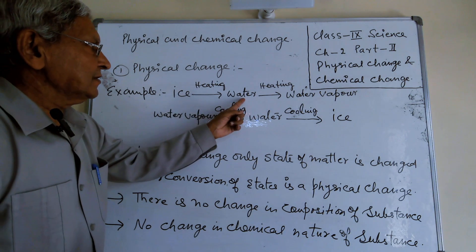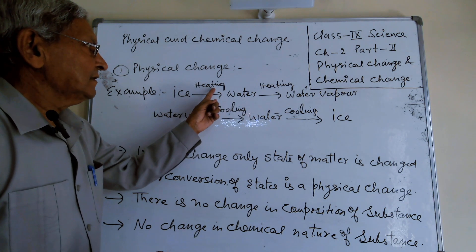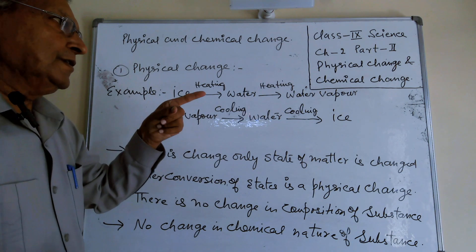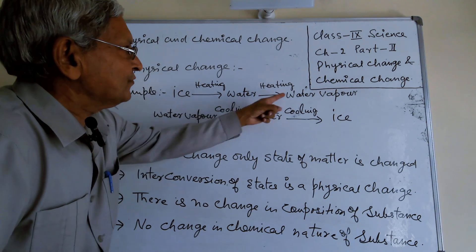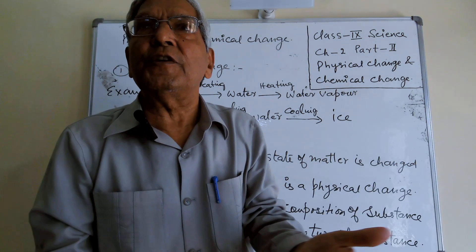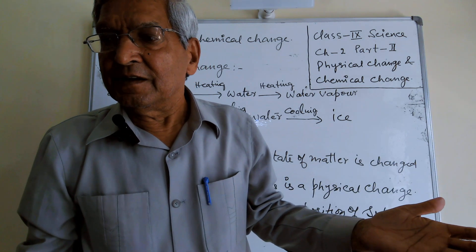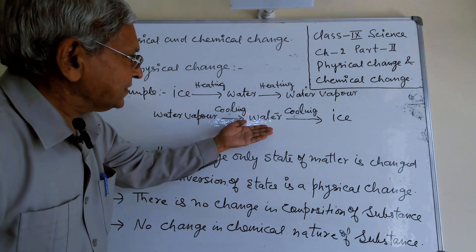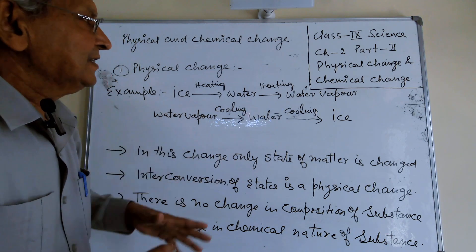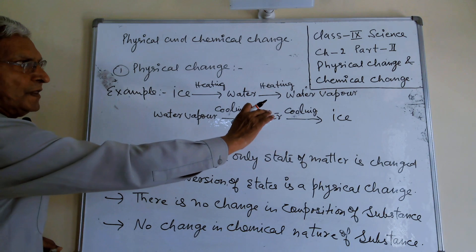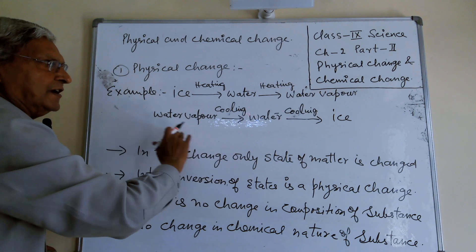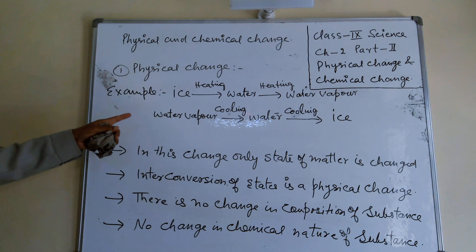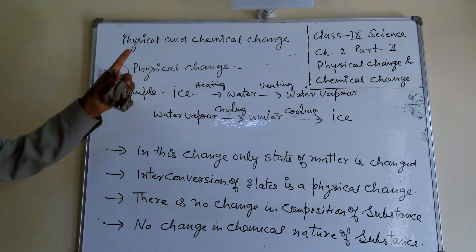Ice can be changed into water on heating and water can be changed into water vapors on heating. But you see, my dear students, ice, water, and water vapors are one and the same thing. There is no difference in their chemical properties, because water vapors can be changed into water and water can be changed into ice. Only the states are changed, and there is no change in the chemical properties of these substances.